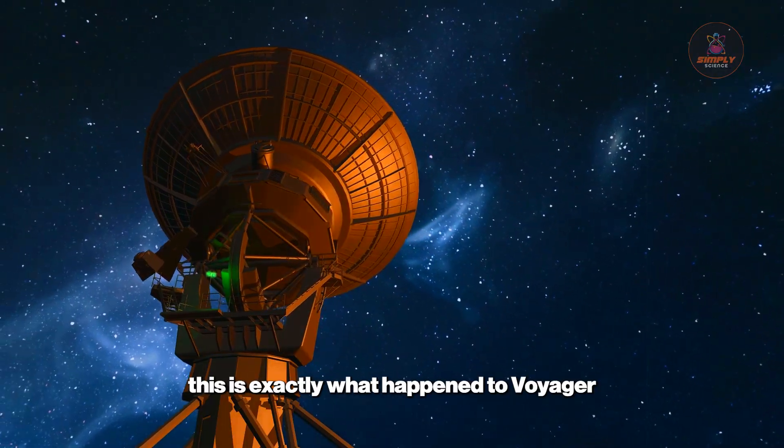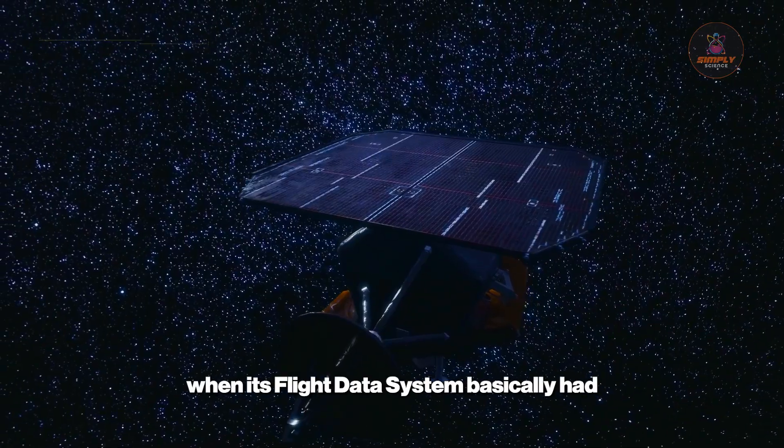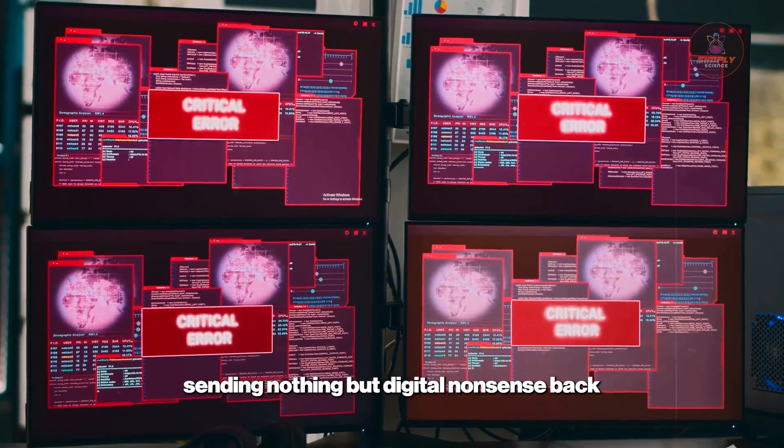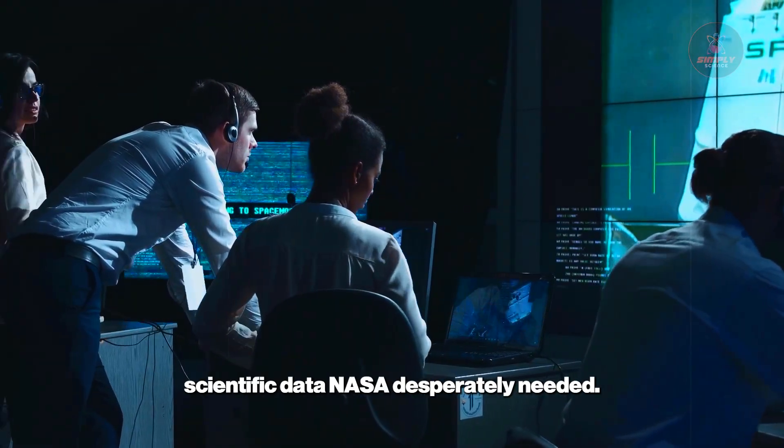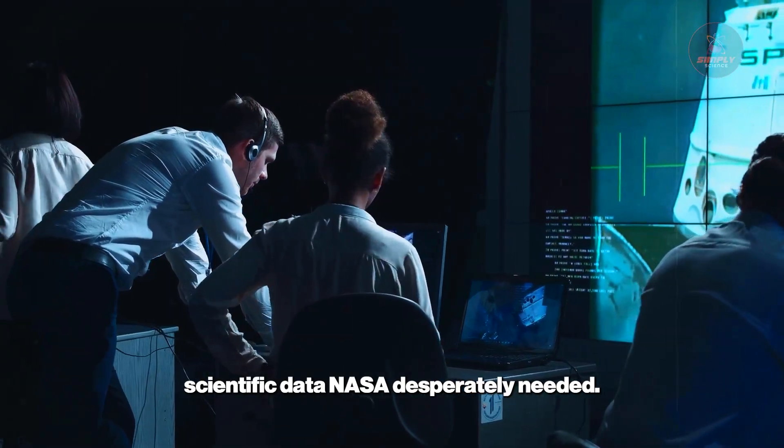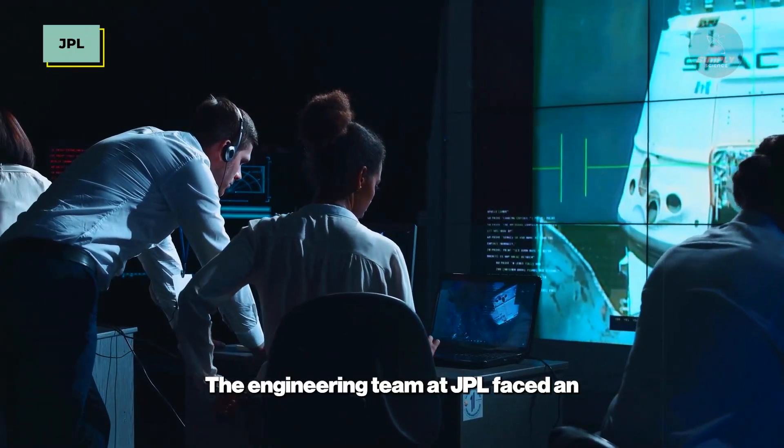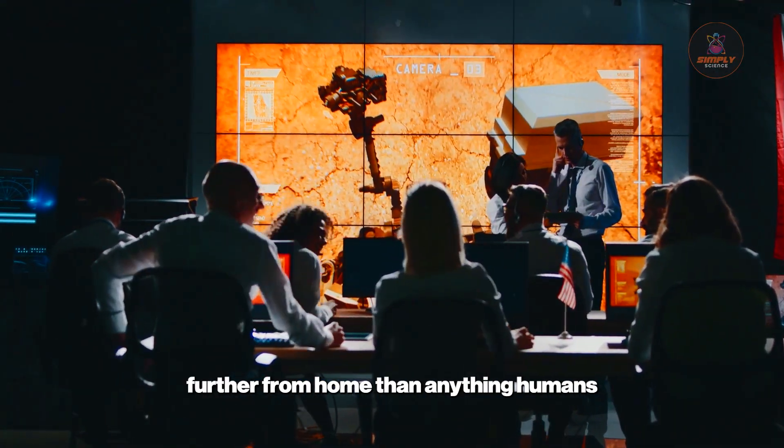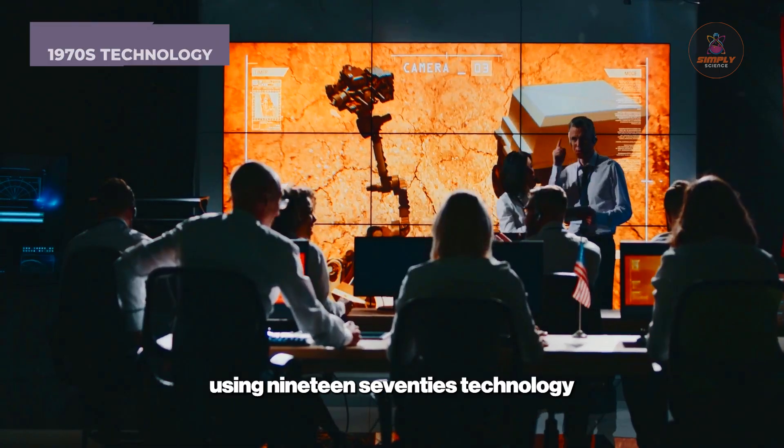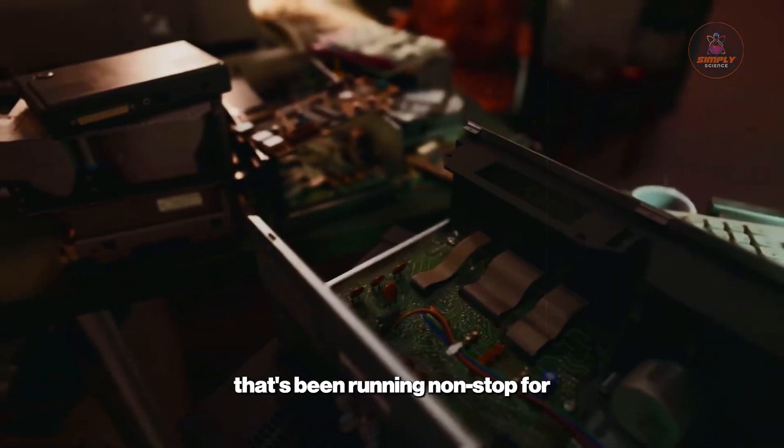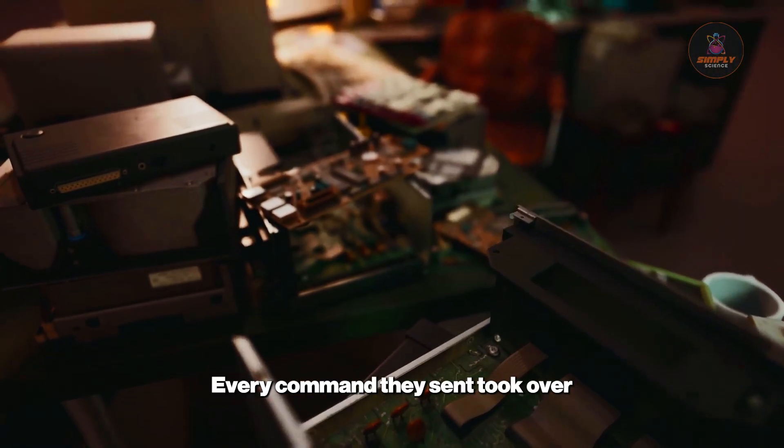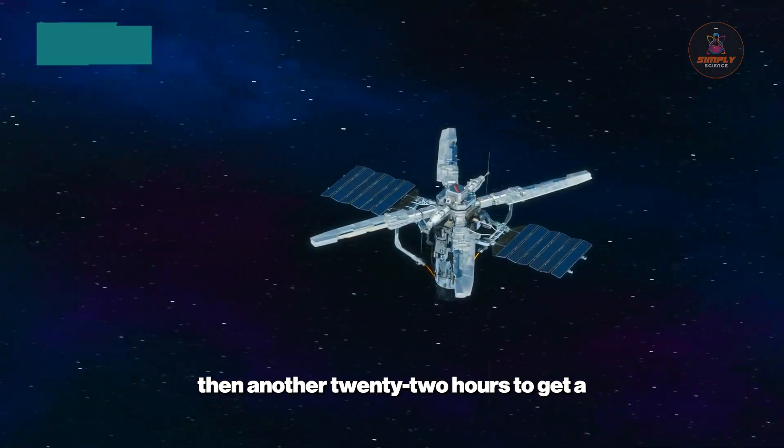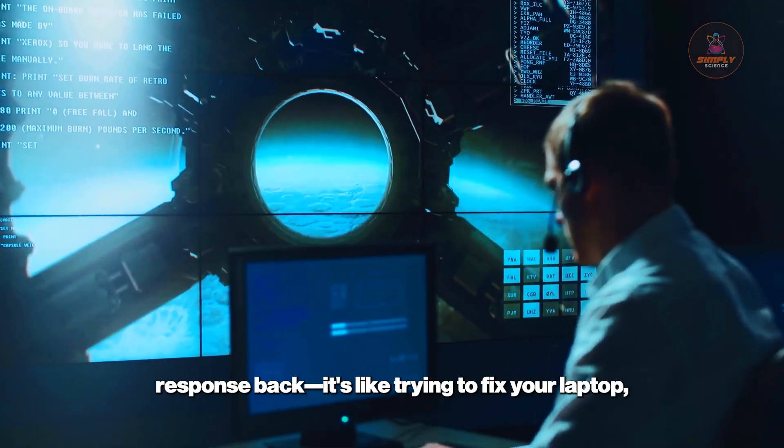This is exactly what happened to Voyager 1 in 2023 when its flight data system basically had a complete breakdown, sending nothing but digital nonsense back to Earth. The engineering team at JPL faced an impossible challenge troubleshooting a computer problem on a machine using 1970s technology that's been running non-stop for 47 years. Every command they sent took over 22 hours just to reach Voyager, then another 22 hours to get a response back.